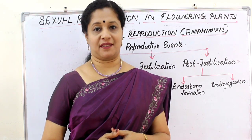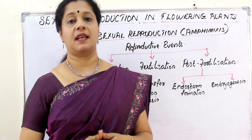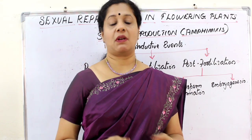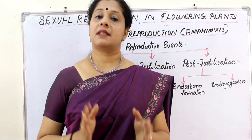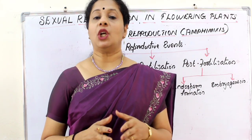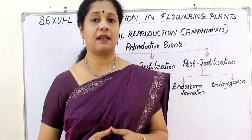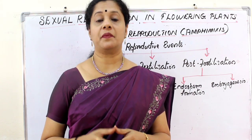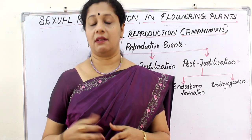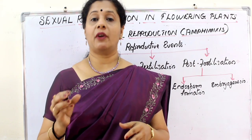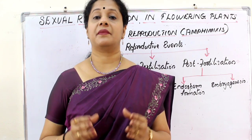What do you mean by reproduction? It is a process of producing new young ones, and it can be two types: asexual or sexual. The second and third chapters both deal with sexual reproduction. When we talk about sexual reproduction, there are specialized cells called gametes that are formed, which fuse to form a cell called a zygote, which in turn develops into the new individual. This process of fusion of gametes to give rise to a zygote is called fertilization.